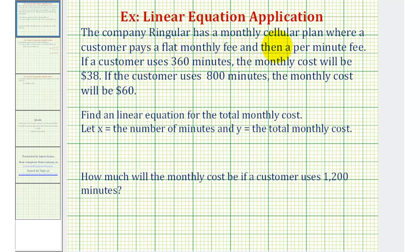The company Singular has a monthly cellular plan where a customer pays a flat monthly fee and then a per minute fee. If a customer uses 360 minutes, the cost will be $38. And if a customer uses 800 minutes, the cost is $60. From this information, we want to find a linear equation for the total monthly cost, where we let x equal the number of minutes used per month and y is equal to the total monthly cost. We also want to know how much will the monthly cost be if a customer uses 1,200 minutes.